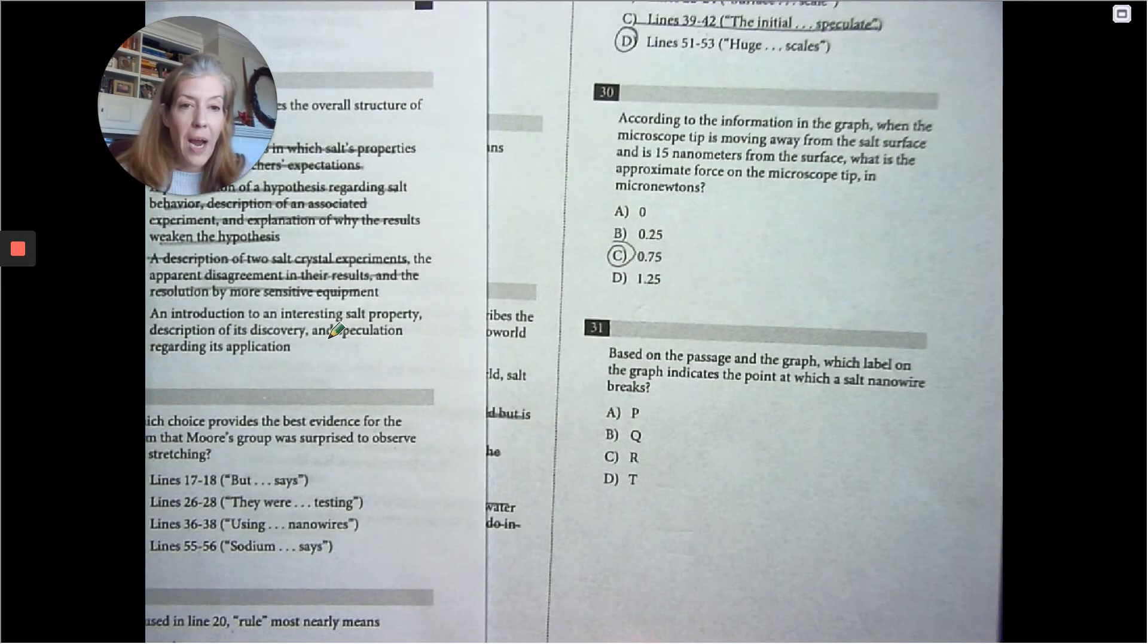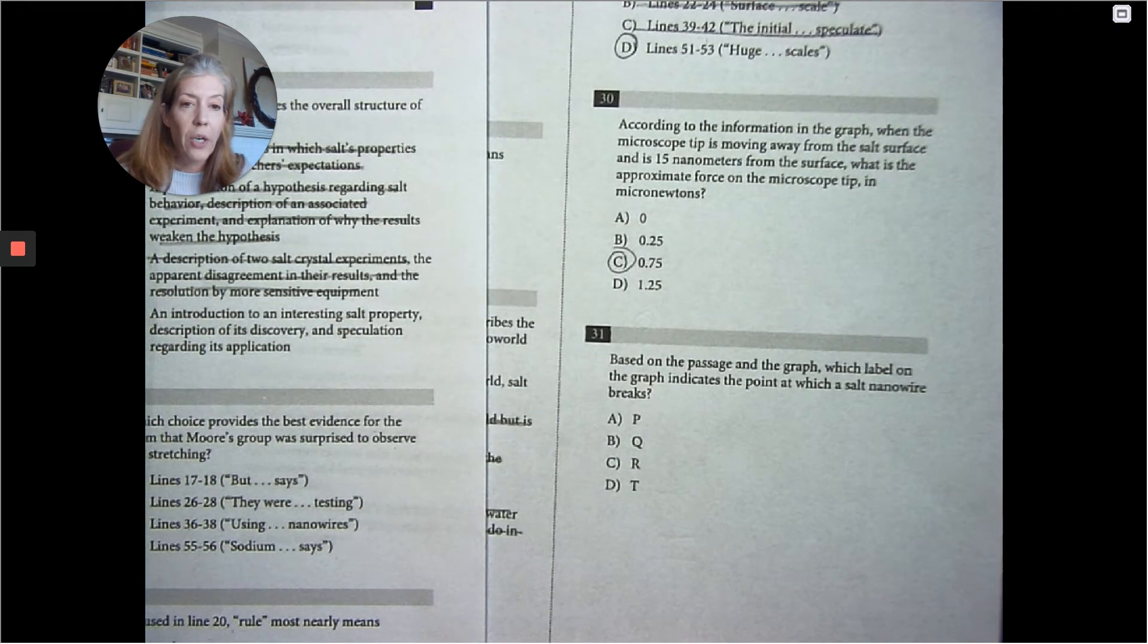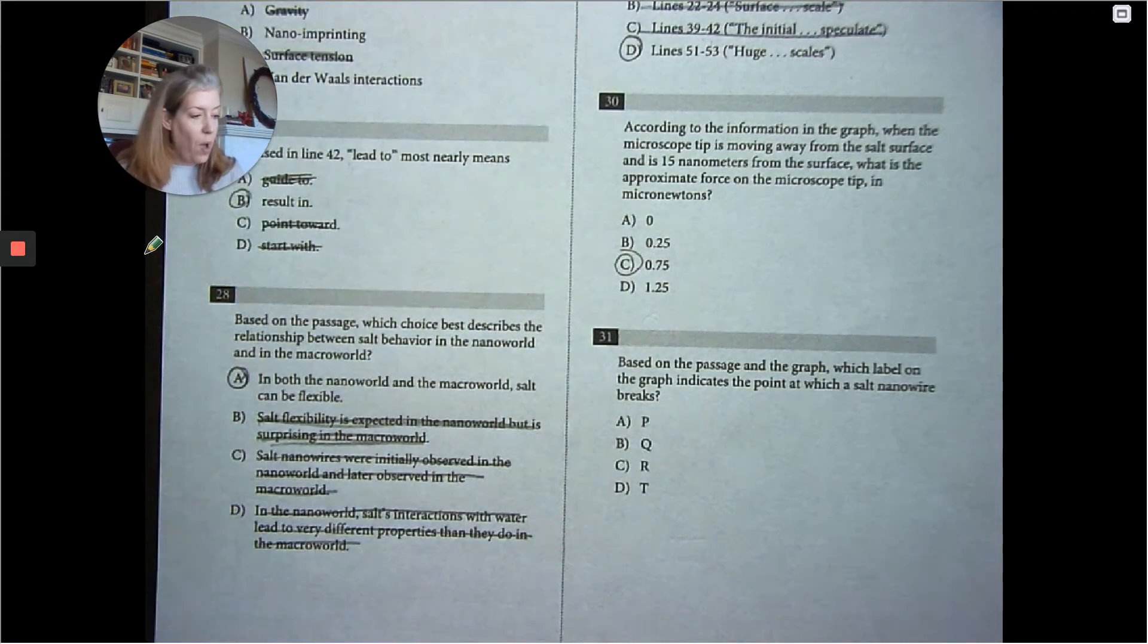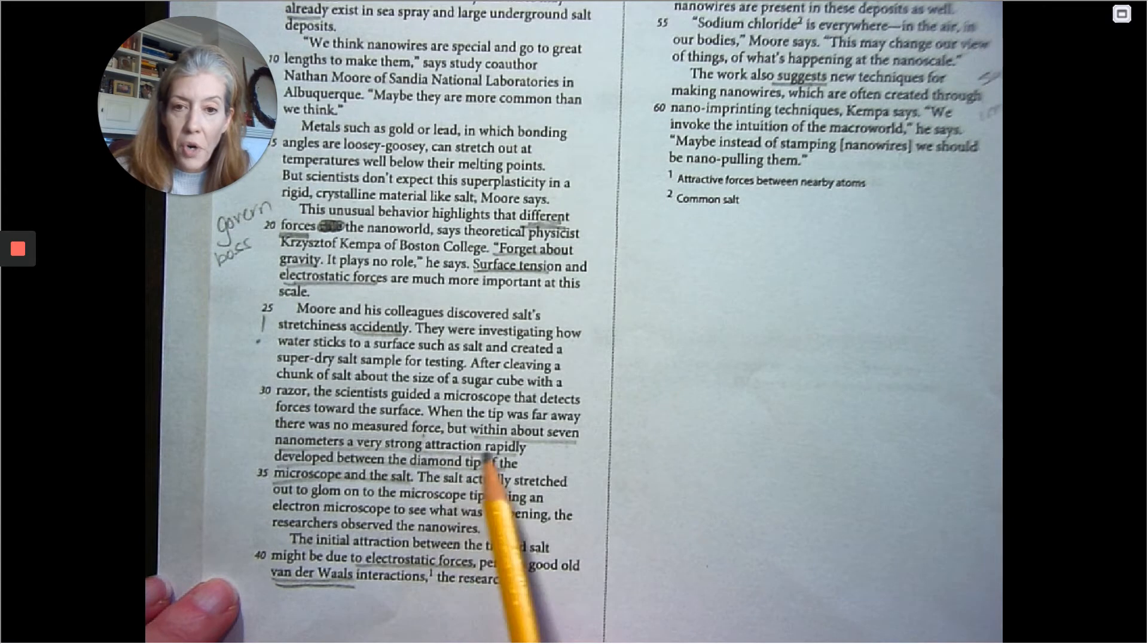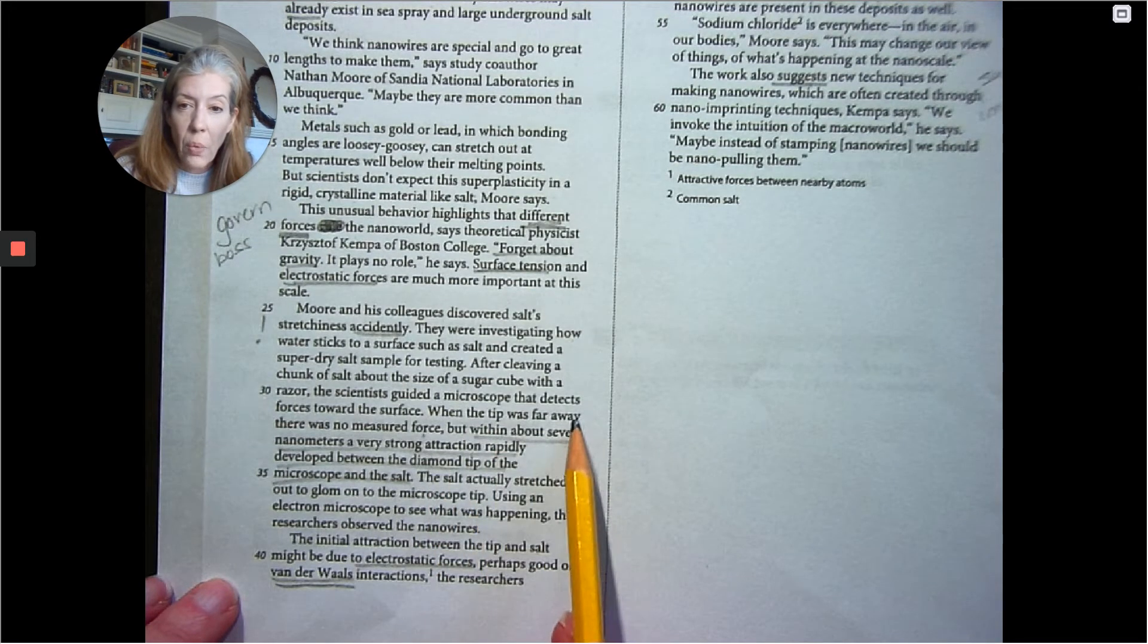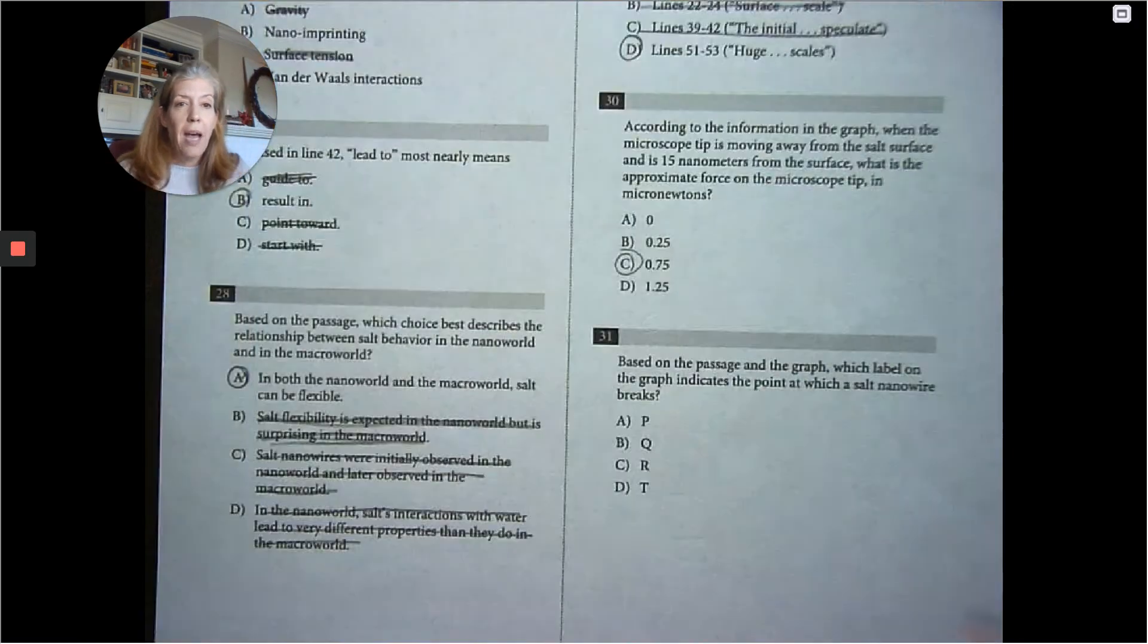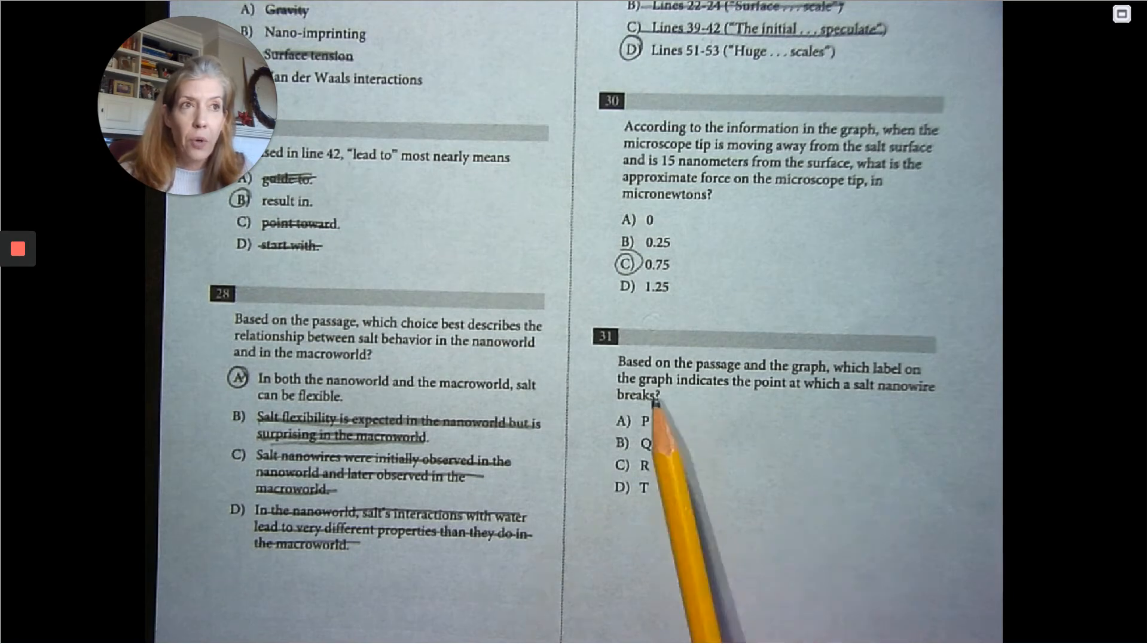Based on the passage and the graph, which label on the graph indicates the point at which the salt nanowire breaks? So this is what I remember from the passage as well. Within about 7 nanometers, a very strong attraction rapidly developed between the diamond tip of the microscope and the salt. But when the tip was far away, there was no measured force. So we're looking at.